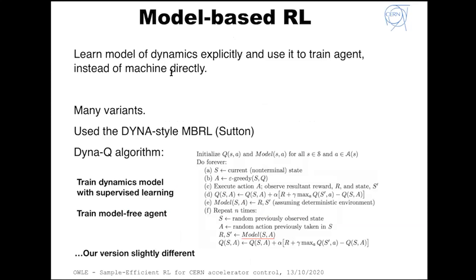Model-based reinforcement learning had been interesting to us for a long time because of several benefits. You explicitly learn the model of the dynamics and can use it for other purposes afterwards. You use this learned model to train the agent instead of going to the machine directly, which is supposed to reduce the number of interactions with the machine. There are many variants out there, and the algorithm is more complex to deal with.